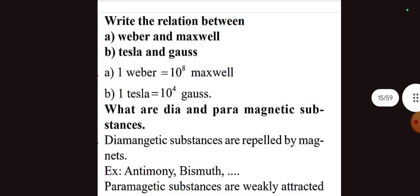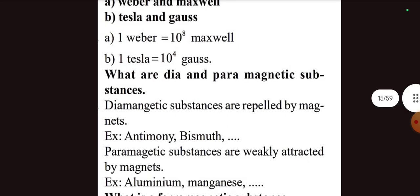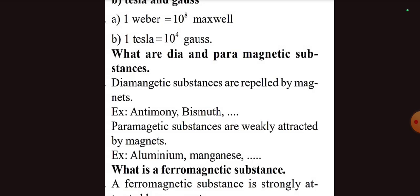Relation between Weber and Maxwell, Tesla and Gauss. One Weber equal to 10 to the power of 8 Maxwell. One Tesla equal to 10 to the power of 4 Gauss. Difference between dia, para, ferromagnetic with example. Question.